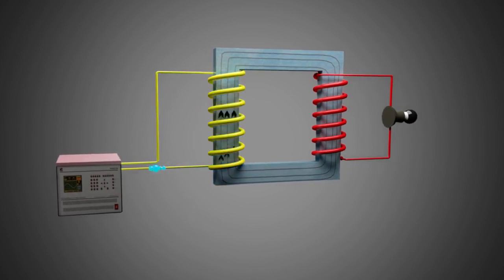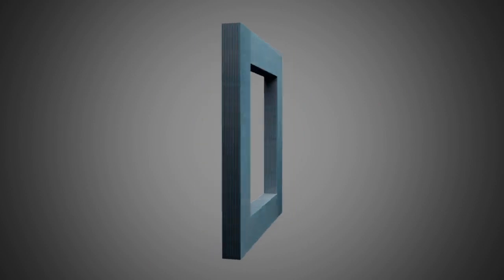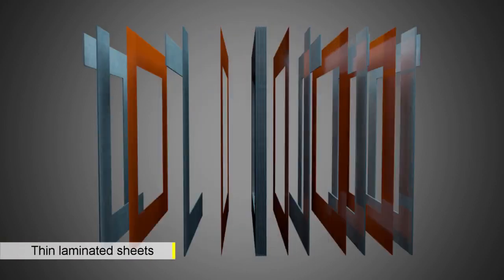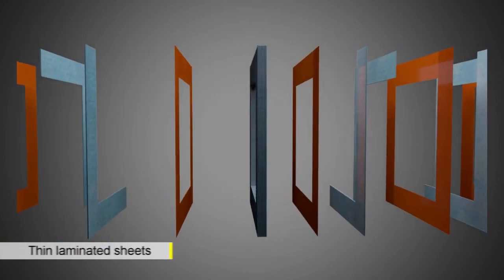The coils are wound on the metal core as shown. This metal core links most of the flux from one coil to the other. Now the core itself is made in an interesting way. It is not a solid core.